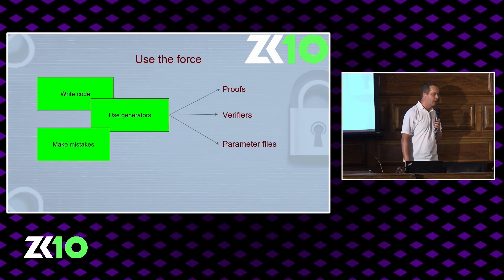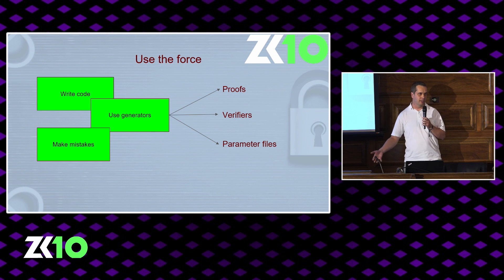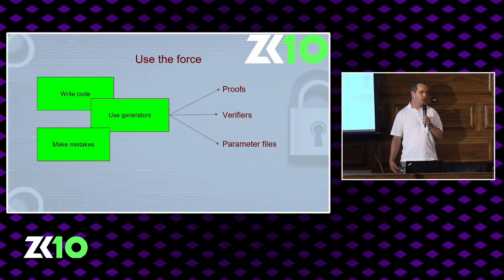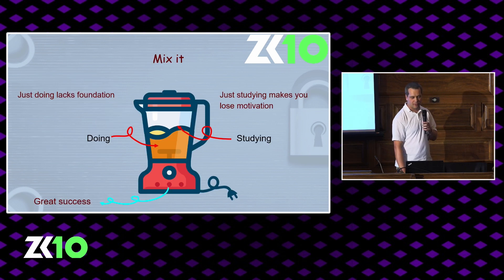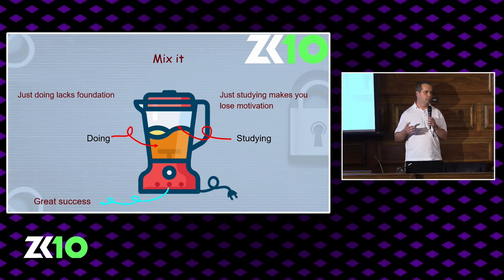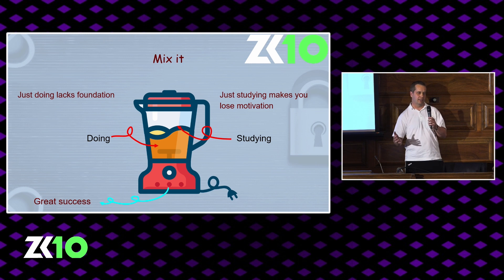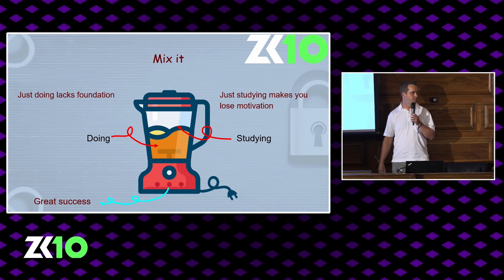Once you understand something, apply it. Maybe start writing a little code. Maybe use some ready framework which generates proofs or a verifier code and parameter files for you. You will be making mistakes and that's totally fine. I was like, okay, there's verifier parameters, I give them to the prover, I get lots of errors — that was a stupid mistake, but that's how you learn. If you just do the theory part, you might get bored. So apply what you've learned, then study a bit more. Do it all together — it's much more fruitful.